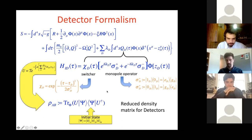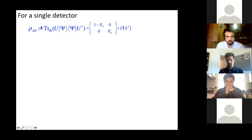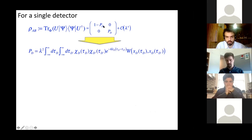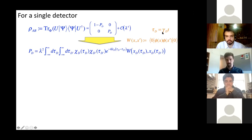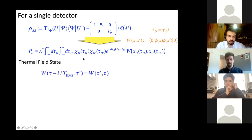The quantity P_D is called the transition function and is related to the probability that the detector gets excited from the ground state. The quantity W is the Wightman function of the field — basically the vacuum two-point correlator. τ is related to t by some relativistic gamma factor, depending on the situation. If we have a thermal field state, the Wightman function will obey the KMS condition: if we shift τ by an imaginary factor divided by the KMS temperature, we get the same thing — that's the Kubo-Martin-Schwinger condition, a general condition for a thermal state of a quantum field.